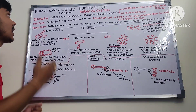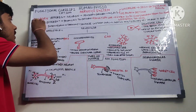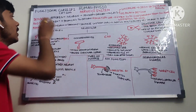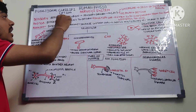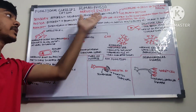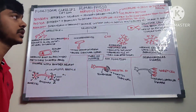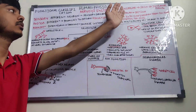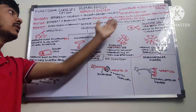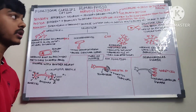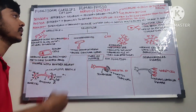Now let's continue with the classification of neurons by function. A sensory neuron — also called an afferent neuron — is present in sensory organs and brings the stimulus to the central nervous system where it can be processed. There are two types: unipolar, found in the skin and other visceral organs, and bipolar, found in specific organs such as the retina or olfactory epithelium.